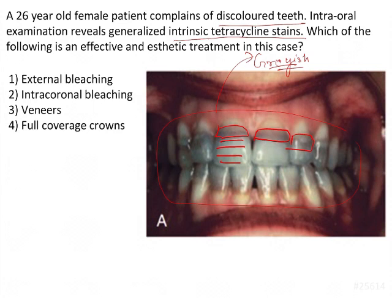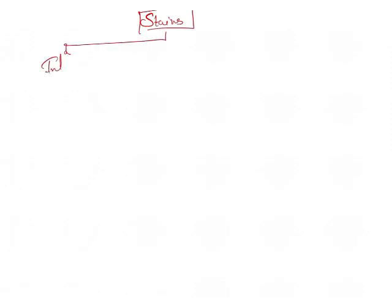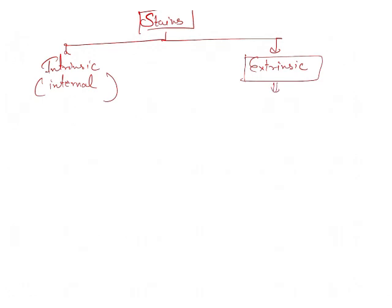Before coming to the answer, let me explain about the stains. Stains can be intrinsic or extrinsic. Stains that get incorporated inside the enamel or inside the tooth during development are known as intrinsic — these are internal stains. Extrinsic stains are acquired from outside and they form a layer on the surface of the tooth.